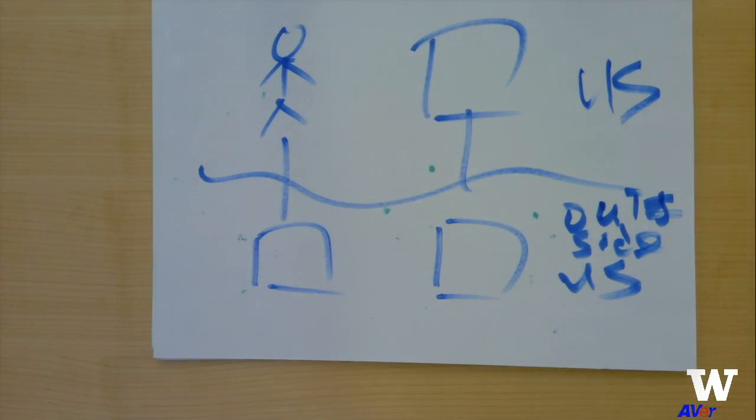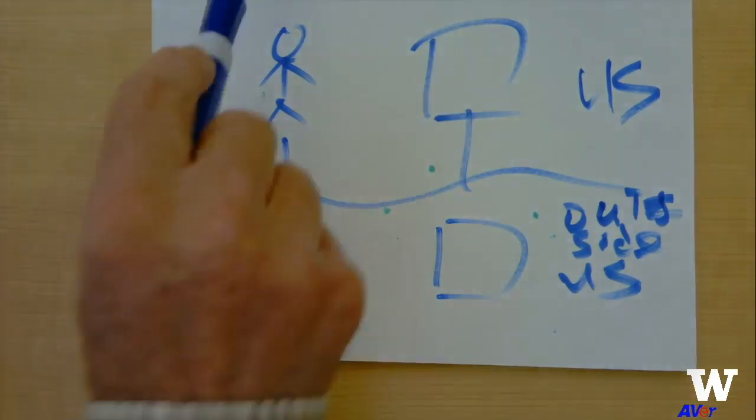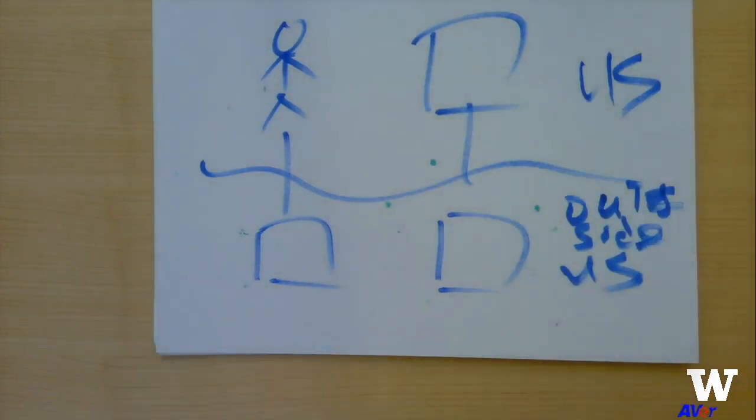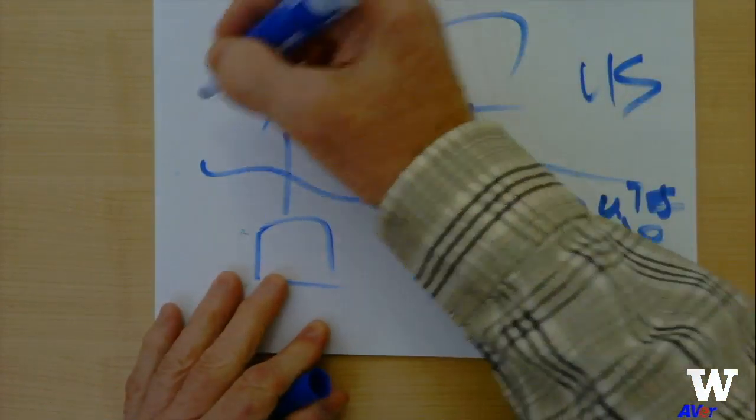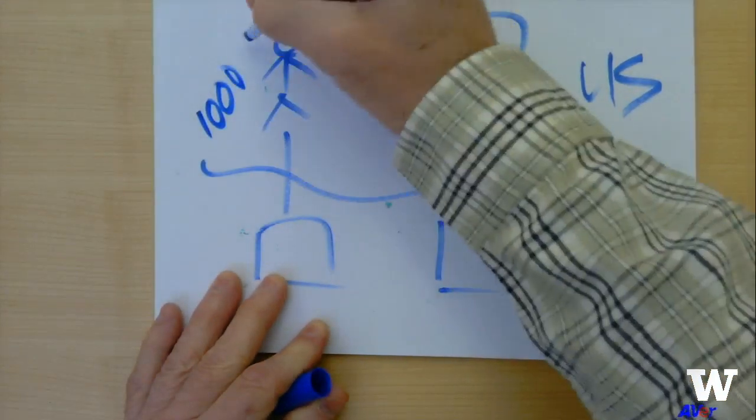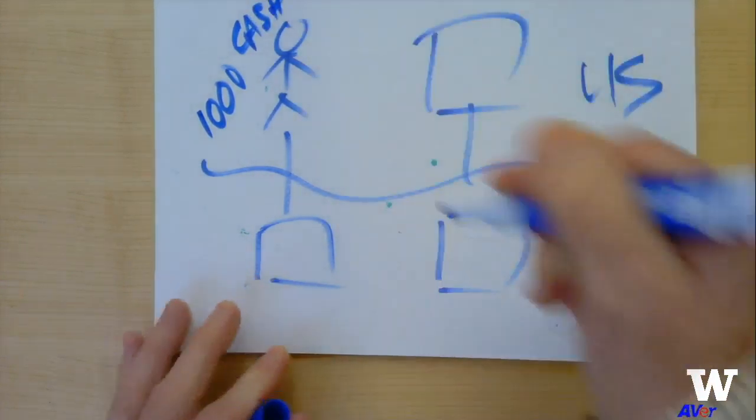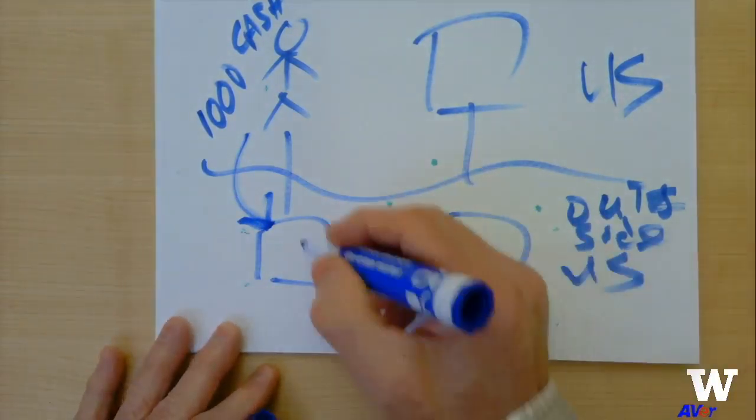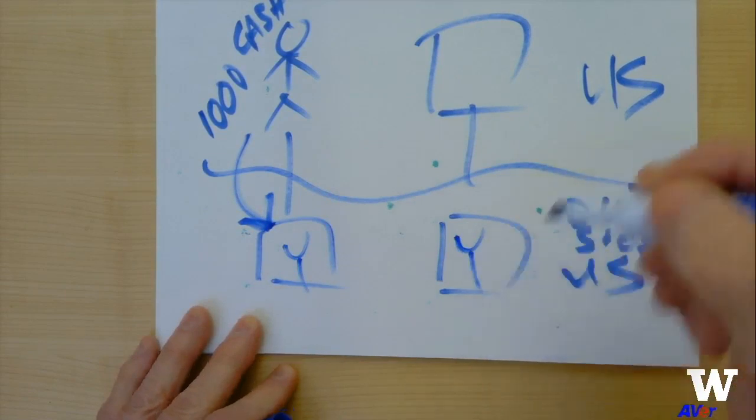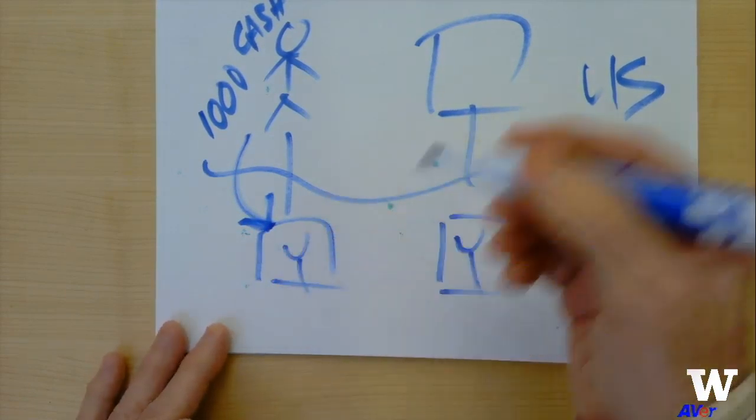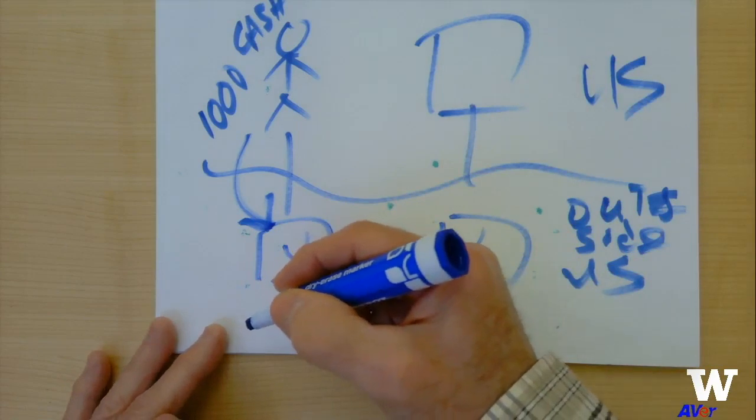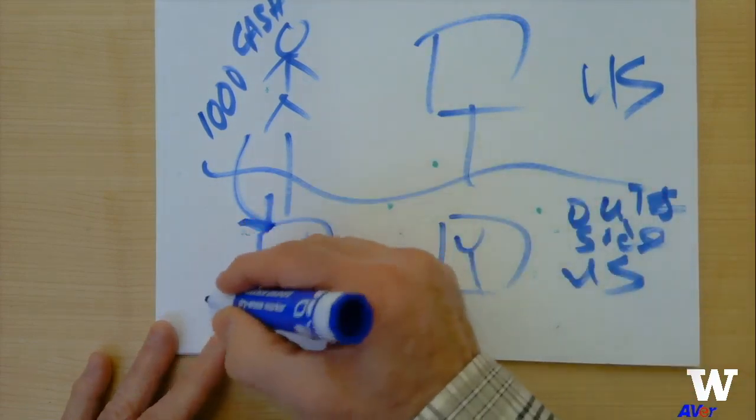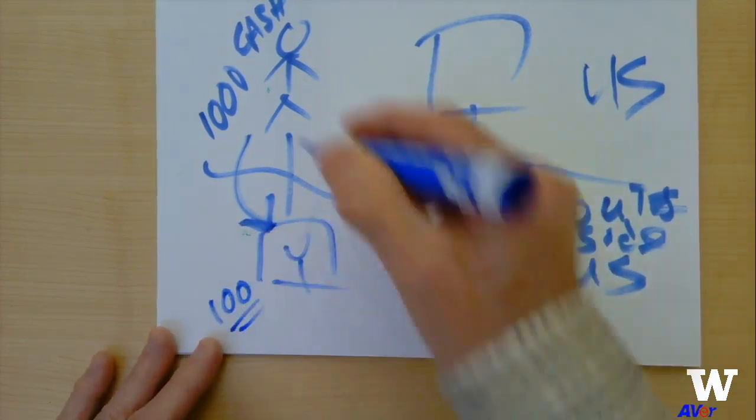If the shareholder, the U.S. shareholder, the individual or the corporation, in the absence of Subpart F, if it had just a thousand of cash, and it dropped that cash into Y, and Y earns interest income of, looking back years when interest rates were higher to make it round, let's assume it's a ten percent interest rate, it makes a hundred annually off of this cash.